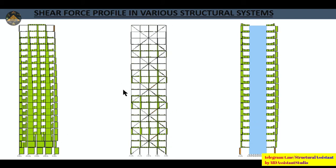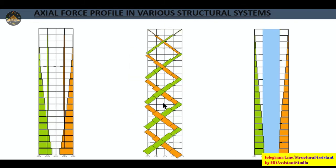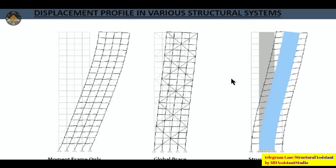With global bracing, shear forces decrease to very low values. With structural walls, shear forces decrease but not as much as with global bracing. Regarding axial forces, in a moment frame axial forces are distributed one way, and with structural walls there are some intermediate axial forces. The deformation profile with global bracing is the most desirable because displacement at the top is very small, which is why this type of structure is always preferred.